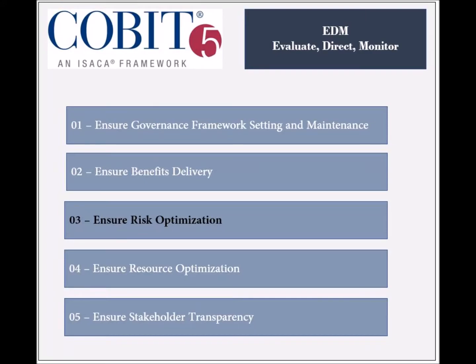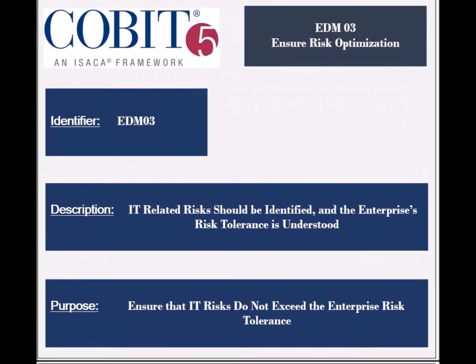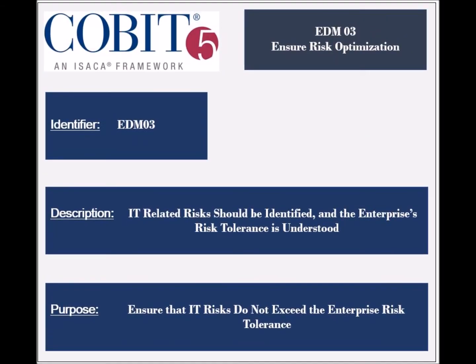The third process of the Evaluate Direct and Monitor domain is called Ensure Risk Optimization. The identifier of the process is EDM3. The process ensures that the IT-related risks affecting the enterprise are identified and managed, and that the enterprise's risk appetite and tolerance are defined and communicated. The purpose of this process is to ensure that the identified IT risks do not exceed the risk tolerance of the enterprise.